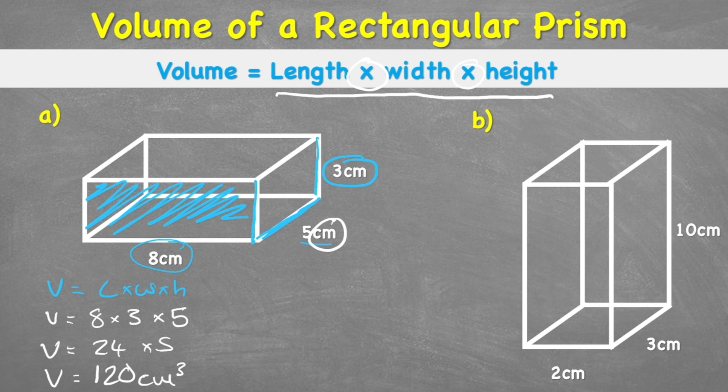So therefore our answer is 120cm cubed. Let's put this into another order just to prove that we can do the multiplication in any order. Let's do 5 times 3 times 8. 5 times 3 is 15. Times 8 equals 120. So we get the same answer.